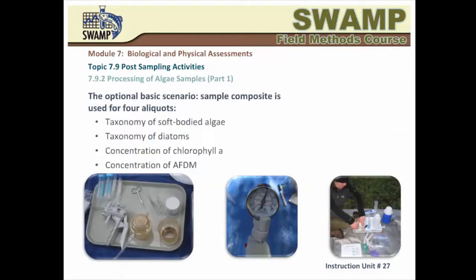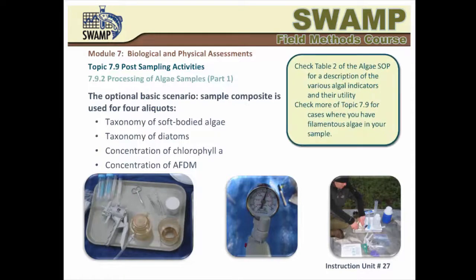Algae samples can be used for a number of important analyses, including taxonomic identification and enumeration of two major groups to generate community composition metrics, and measurements of the concentrations of chlorophyll A and organic matter — both indicators of algal biomass. The importance of each algal indicator is described in Table 2 of the Algae SOP. Note that these four indicators, along with algal cover assessed during the pebble count, are all optional components selected on the basis of specific project objectives. Algae are very vulnerable to damage by sun, heat, or desiccation, so the composite algae sample must be processed immediately after collection of the final subsample.